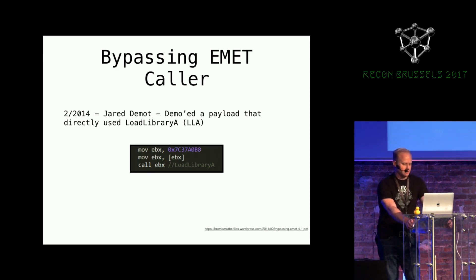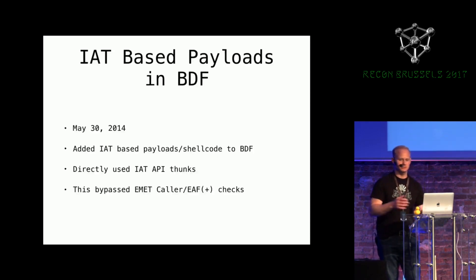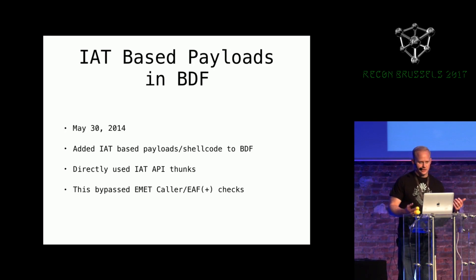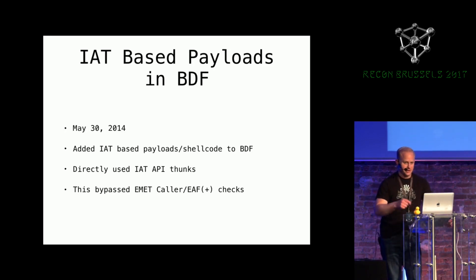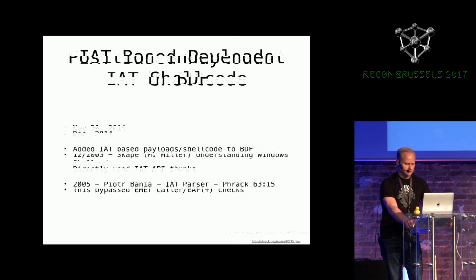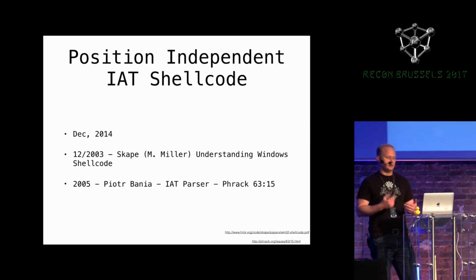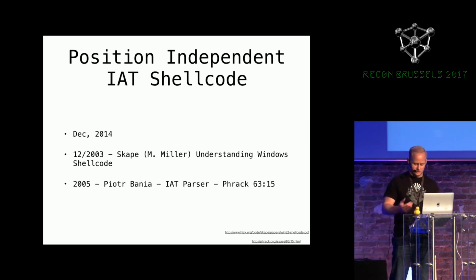After reading Jared's paper, I decided to put this into BDF itself and back to our factory. I made some import address table payloads that would use the actual functions that were in the import table directly, and this bypassed EMET EAF and caller checks. Later on, I actually added patching of the import address table so that I could add whatever APIs I wanted at any time. But I wanted to do position-independent import address table payloads to see what would happen — this was fast-forward December 2014.